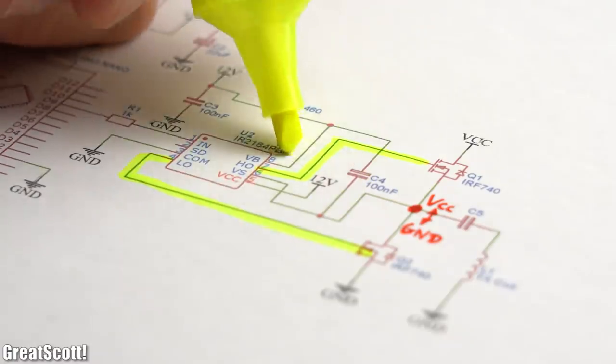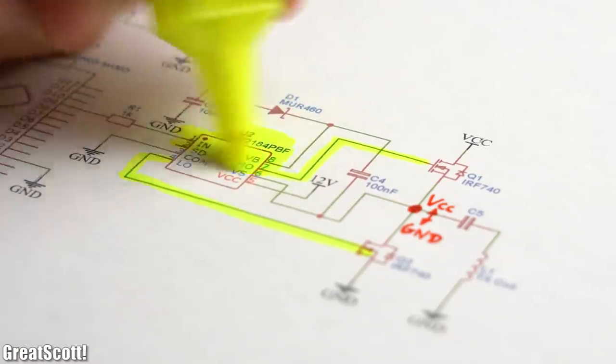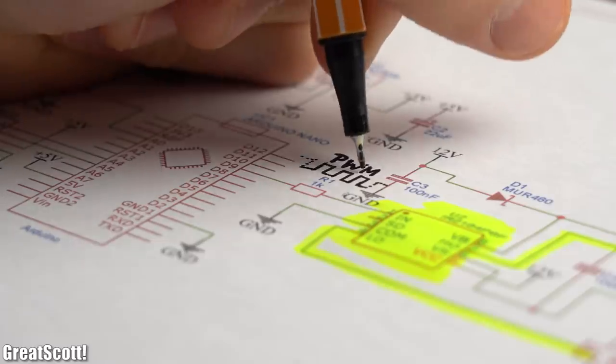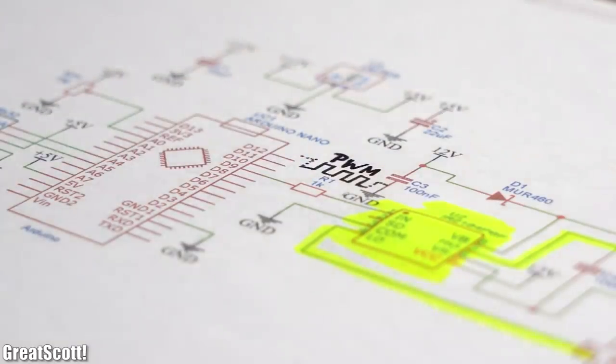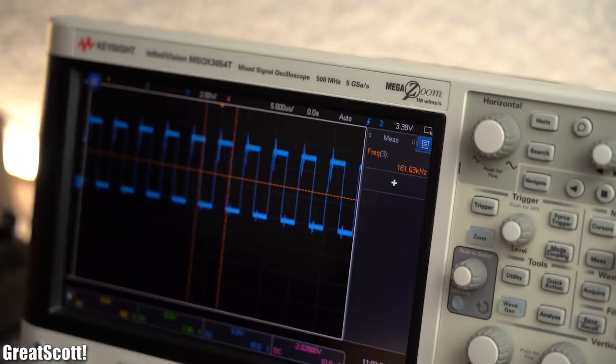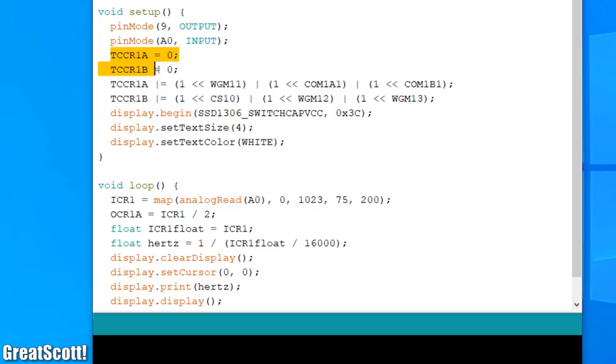The MOSFETs are controlled by an easy to use MOSFET driver with integrated bootstrapping, who gets its PWM control signal from an Arduino microcontroller. I aimed for a frequency range between around 80kHz and 200kHz, and created this signal by utilizing the timer 1 of the microcontroller through those lines of code.